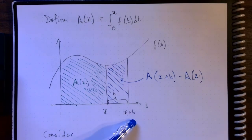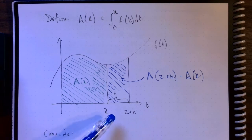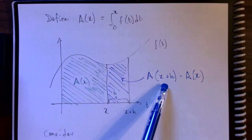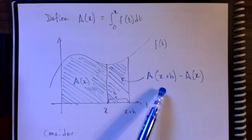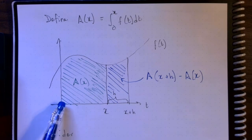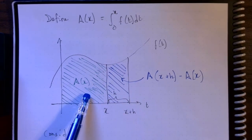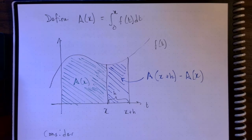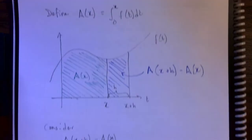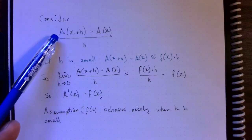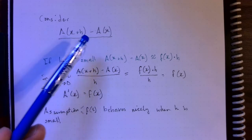If we have two different t values, t equals x and t equals x plus h, then this little strip represents a(x+h) minus a(x). If I just looked at a(x+h) by itself, it would be the area from t equals 0 all the way over to there. But I just want this little strip, so I subtract the other part away. That's the geometric interpretation of what this function a is telling us.